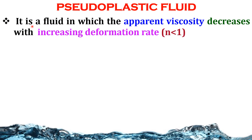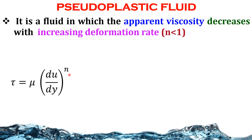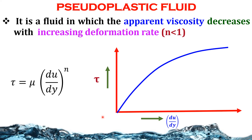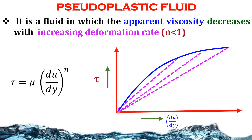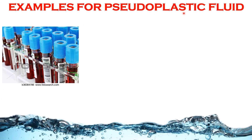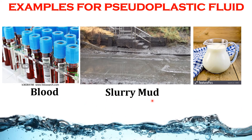Pseudoplastic fluid: It is a fluid in which the apparent viscosity decreases with increasing deformation rate. Here n is always less than 1. The formula is tau equals mu times (du/dy) to the power of n. When we plot a profile between velocity gradient and shear stress, we get a curve. Drawing straight lines from the origin, the slope of each line starts increasing. Examples of pseudoplastic fluids are human blood, slurry, mud, and milk.